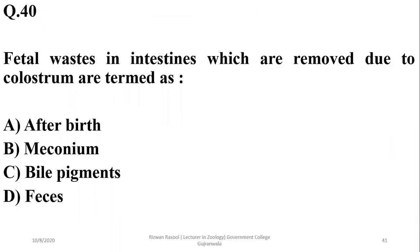The last question: fetal waste in the intestine which is removed due to colostrum is termed meconium, and it is the first waste of the fetus, so the right option here will be beta. That was all about today's lecture. Thank you so much.